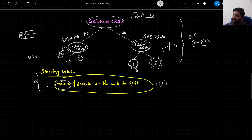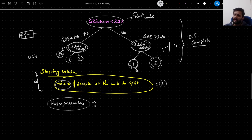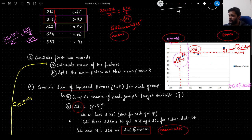The reason for having stopping criteria is to avoid overfitting. Without stopping, the algorithm would simply memorize the entire training data — for each GRE score it would just return that exact chance value. Stopping criteria prevent this overfitting. There are many possible stopping criteria, and they are all called hyperparameters. All the steps we have seen so far constitute the training phase of the decision tree.